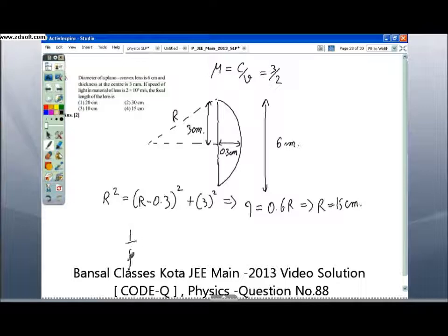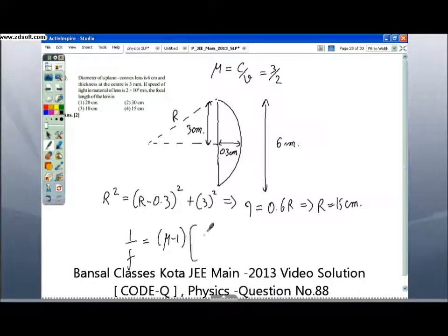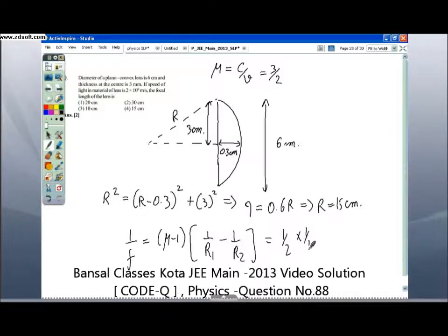Using the formula 1 by F equals mu minus 1 times 1 by R1 minus 1 by R2, equals 1 by 2 times 1 by 15, equals 1 by 30, as it is a plano-convex lens.